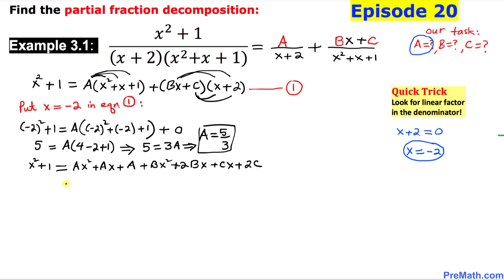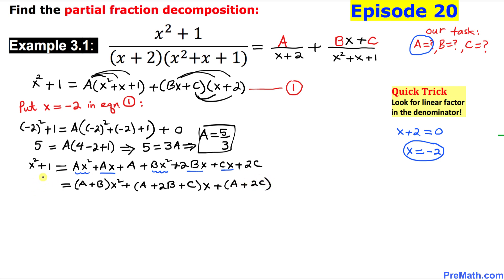Now on the right hand side let's combine like terms by degree. We get a plus b times x squared, plus a plus 2b plus c times x, plus a plus 2c as the constant. On the left hand side we can write this as 1 times x squared plus 0 times x plus 1.